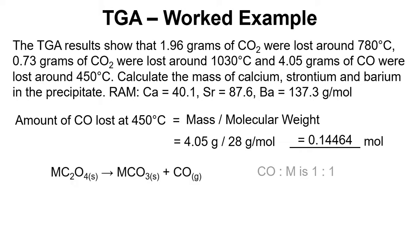Now at this stage we've got a one-to-one ratio between CO and the metal. Or rather it's a one-to-one ratio between carbon monoxide and all three of those metals. So this number here is telling us the total amount of the metals in the precipitate.